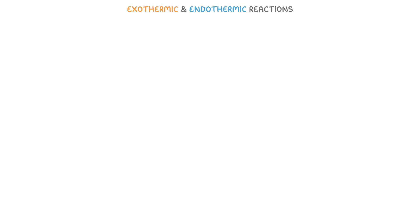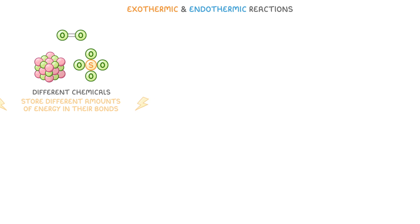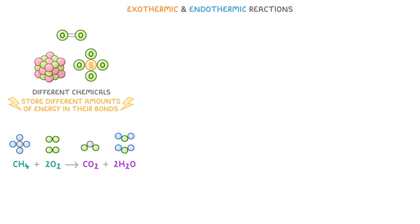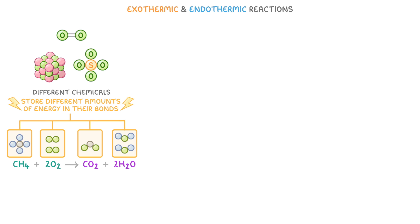The important concept to understand in this topic is that different chemicals store different amounts of energy in their bonds. For example, if we took the reaction methane plus oxygen goes to form carbon dioxide and water, then each of these different molecules would hold a different amount of energy — they'd each have different amounts of energy in their chemical energy stores.